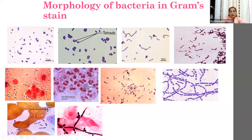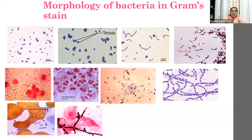A slide showing pus cells with some clearing beside the cocci — a clearing structure that could be a capsule. Gram stain doesn't specifically demonstrate capsules, but such clearing suggests a capsule or reaction around the cells, which is suggestive of Streptococcus pneumoniae. Slides showing intracellular gram-negative cocci — few Neisseria species like meningococci or gonococci — are intracellular, tiny, and tend to be gram-variable. Proper staining steps are critical so these delicate intracellular organisms are not missed.